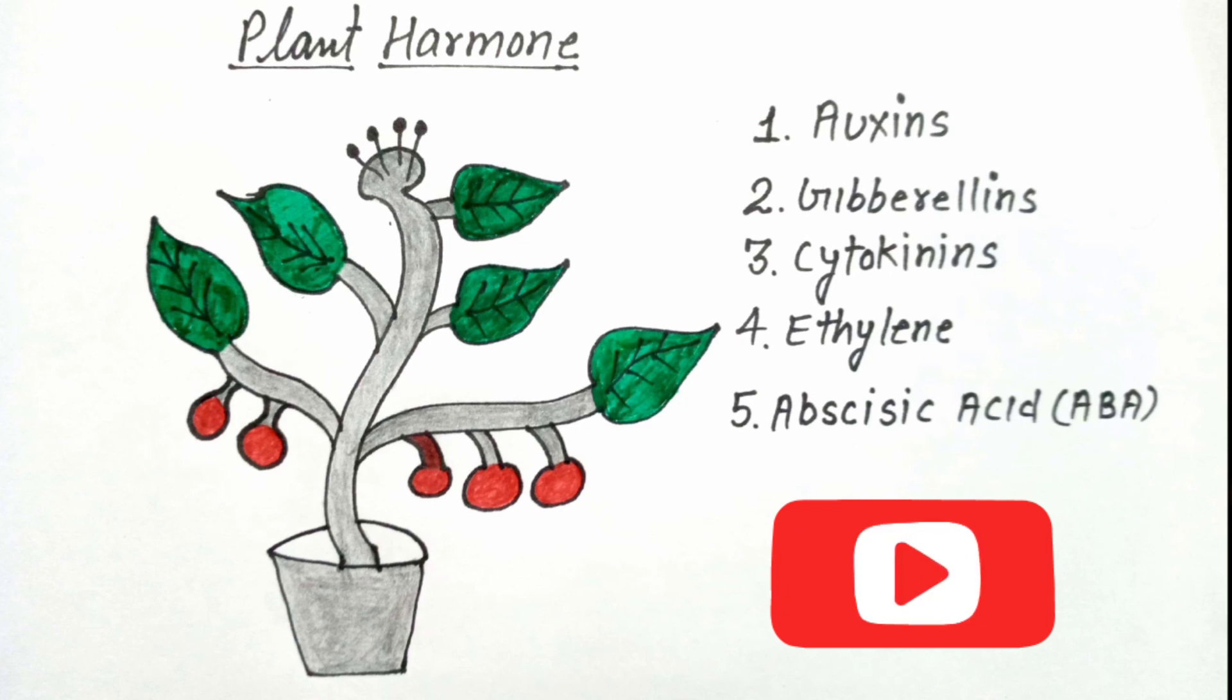Auxin hormone is present on the tip part of the plant, roots, as well as in the shoot system. Gibberellin hormone is present in the stem of the plant. Cytokinin hormone is present in the fruits. Ethylene hormone is a gas which is produced by the fruits. Abscisic acid is present in the leaves. Now we are talking about the functions of these hormones.